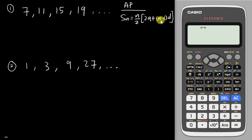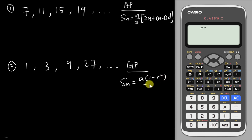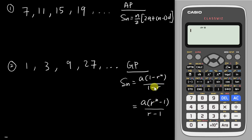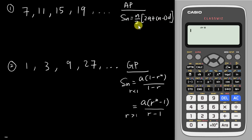For geometric progression you have two formulas: one is a times (1 minus r to the power n) over (1 minus r), and the other is a times (r to the power n minus 1) over (r minus 1). The difference between which one you choose is based on the r value — you choose the first one when r is less than 1, and the second one when r is greater than 1. So you have a few formulas and you kind of need to apply them manually.